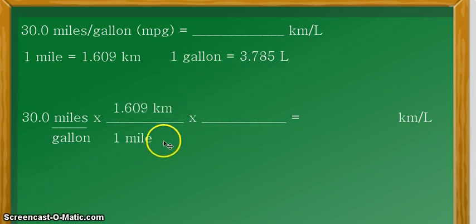To start, we have now one of the equivalent statements in the conversion factor form. We have 1 mile is equal to 1.609 kilometers. Now, again, remember that the units should be properly placed for them to cancel out.